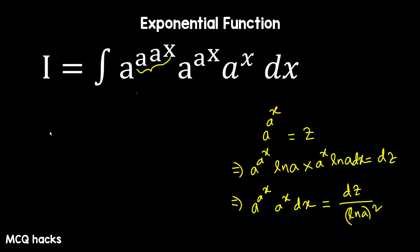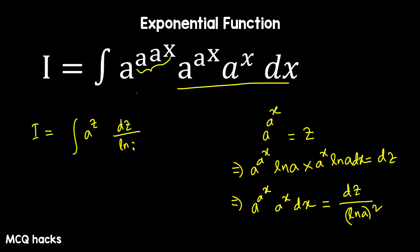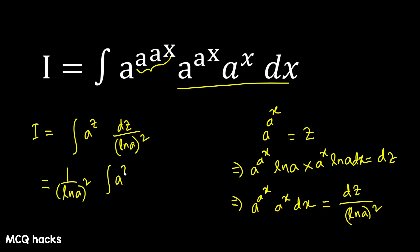Now let me replace here: the integration of a to the power z. So, for a to the power z, what can we write? dz divided by ln a whole square. Now, ln a is a constant — I will keep the constant outside. So ln a whole square. What remains: integration of a to the power z dz.